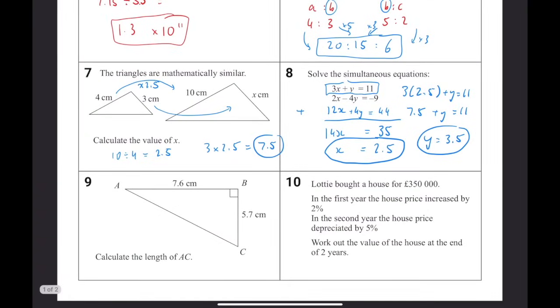Question number 9. Calculate the length of AC. A right-angled triangle where we have two other sides indicates Pythagoras. So what we're going to want to do to get c, we do the square root of the other two squared and added up. So if we put that into the calculator, we get an answer of 19 over 2, which is equivalent to 9.5.